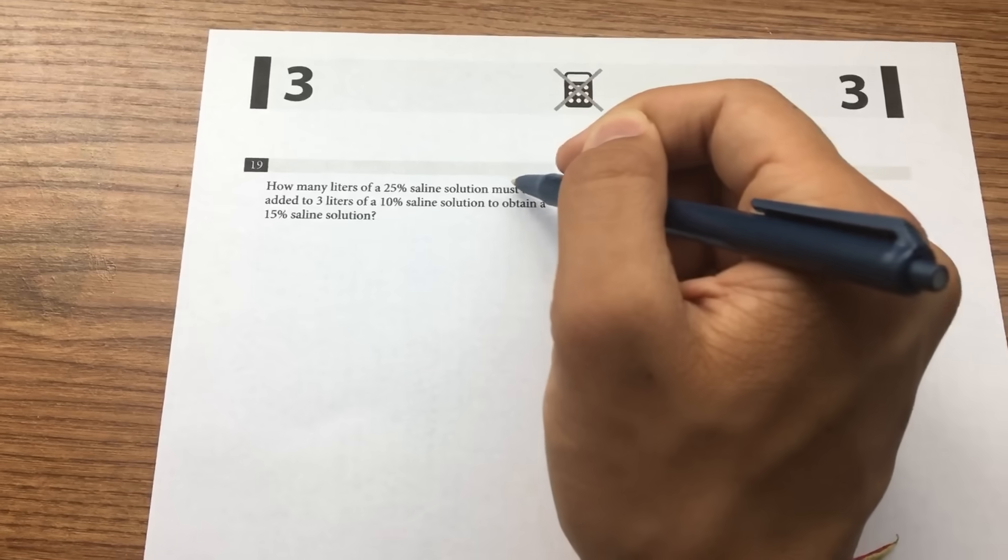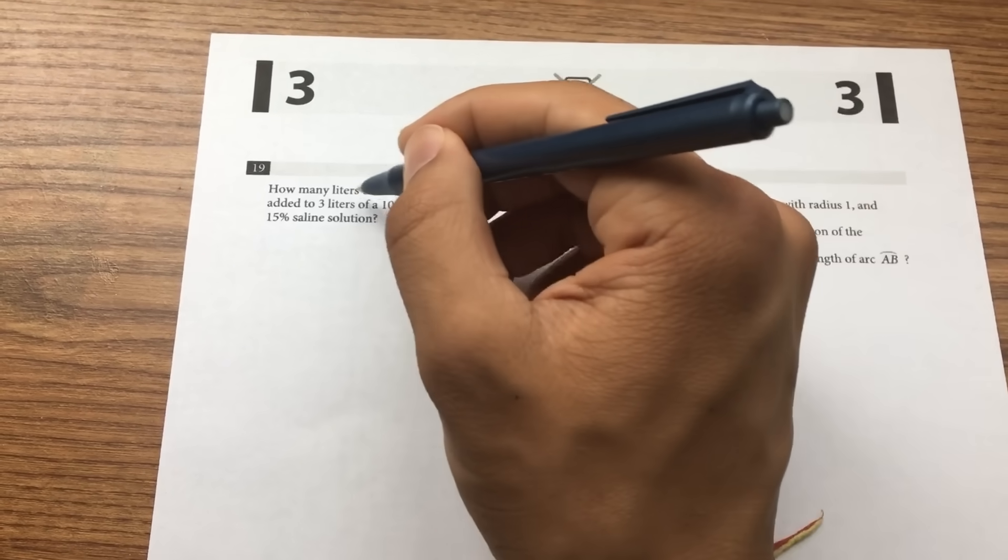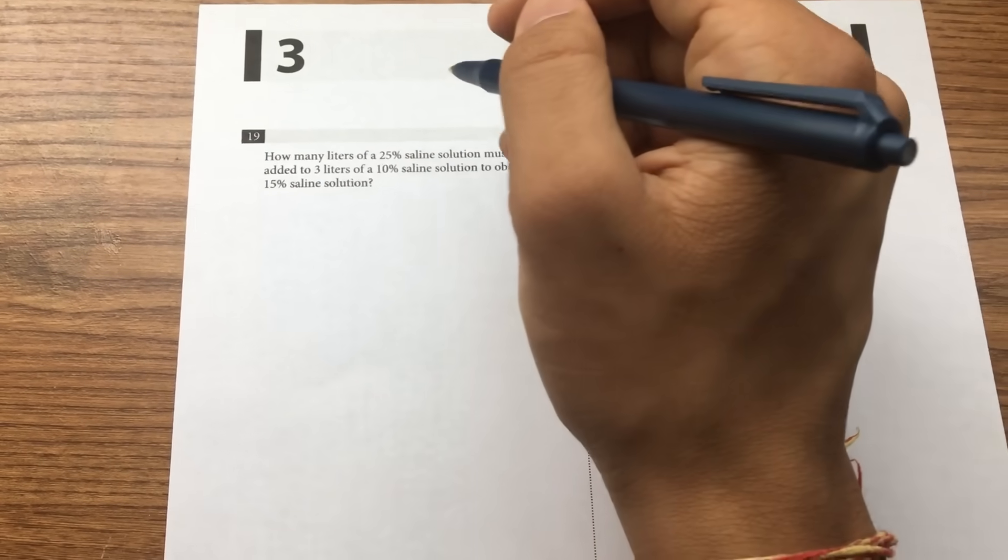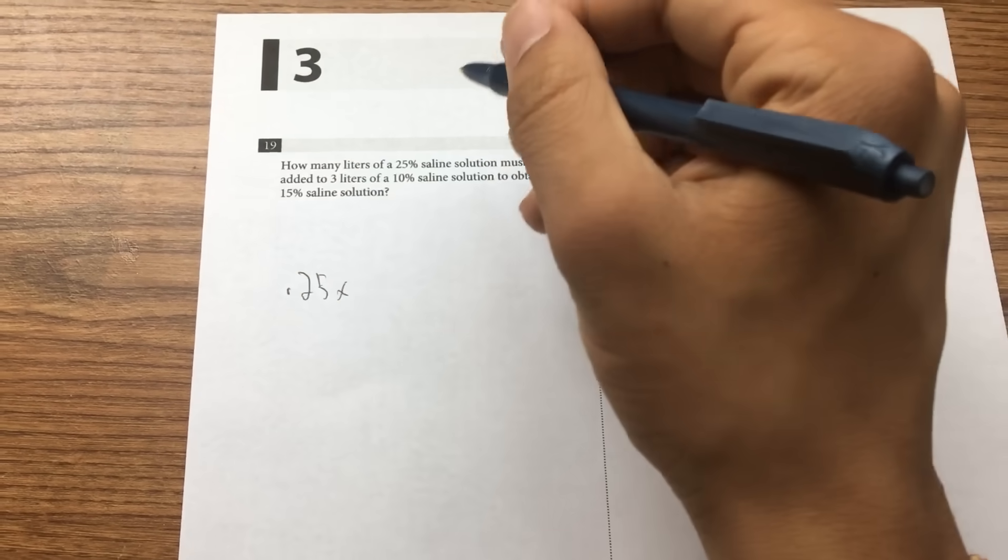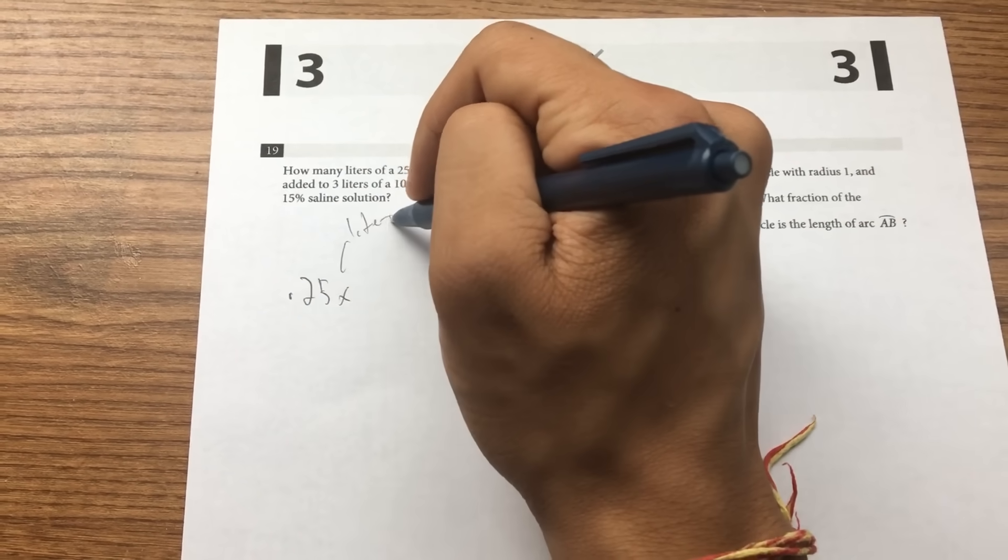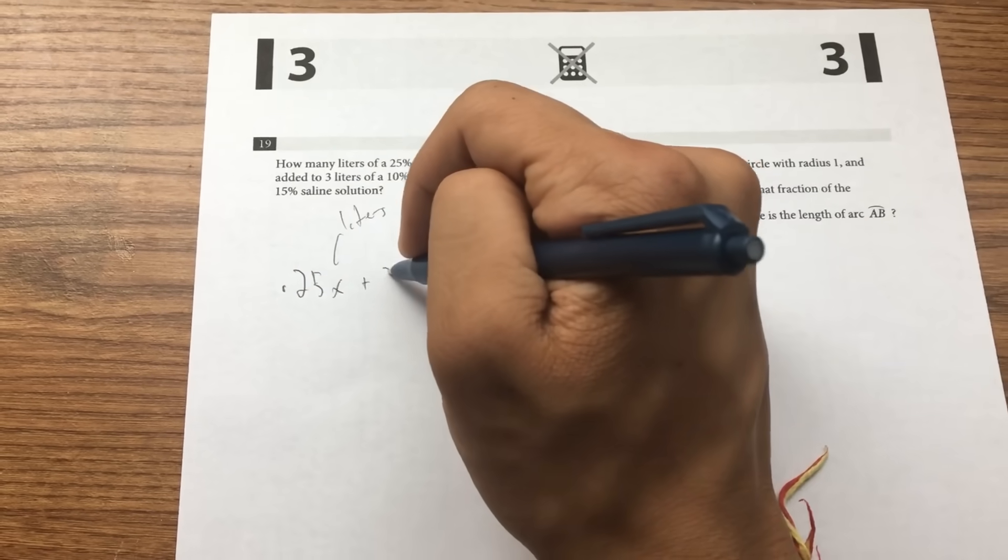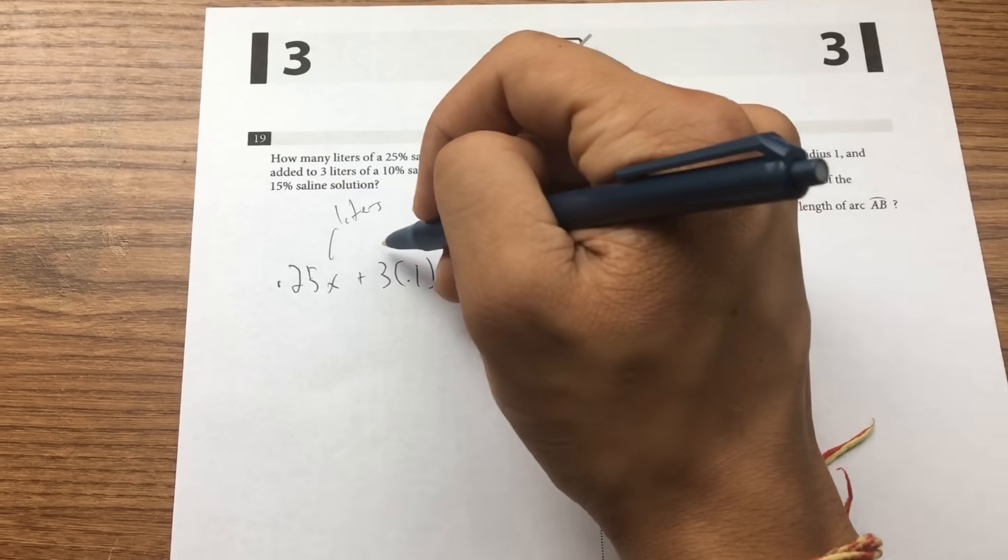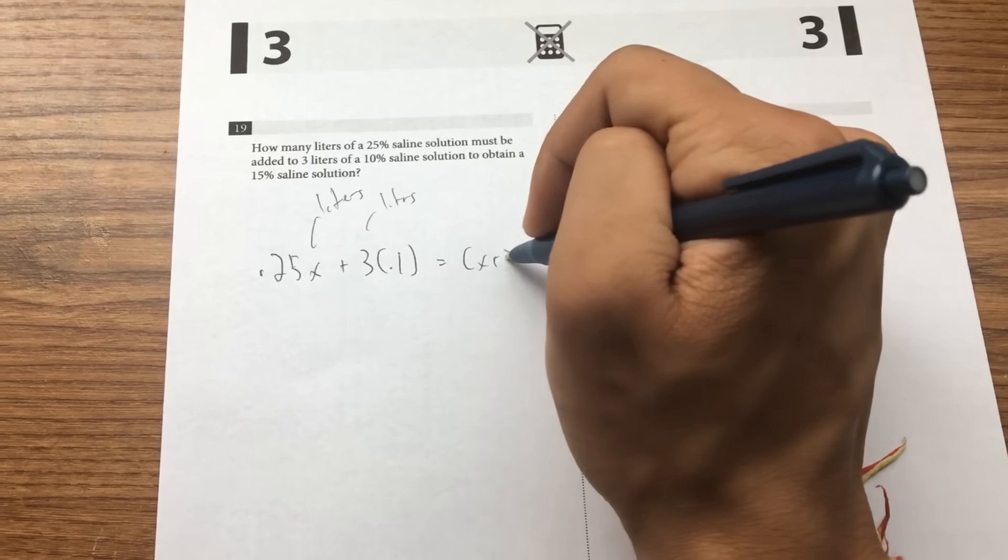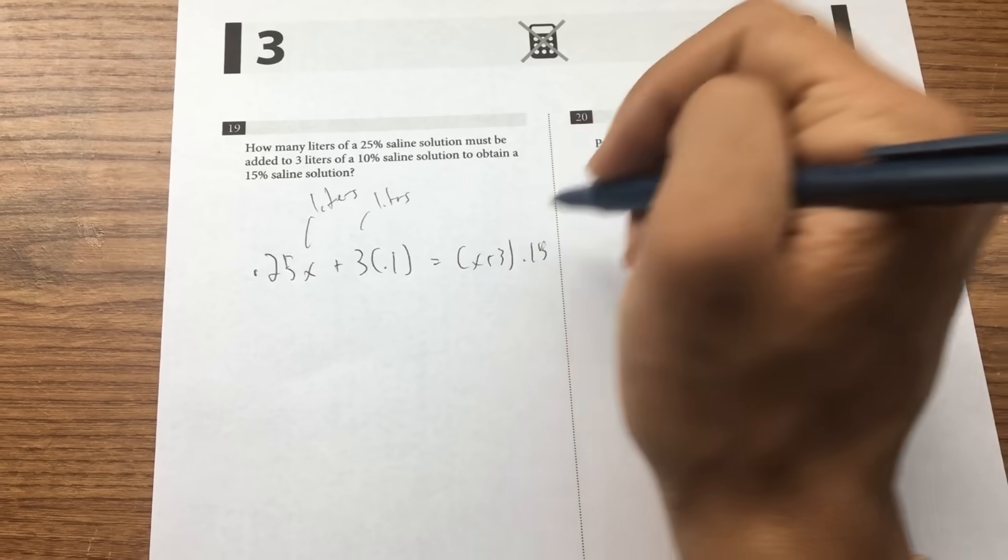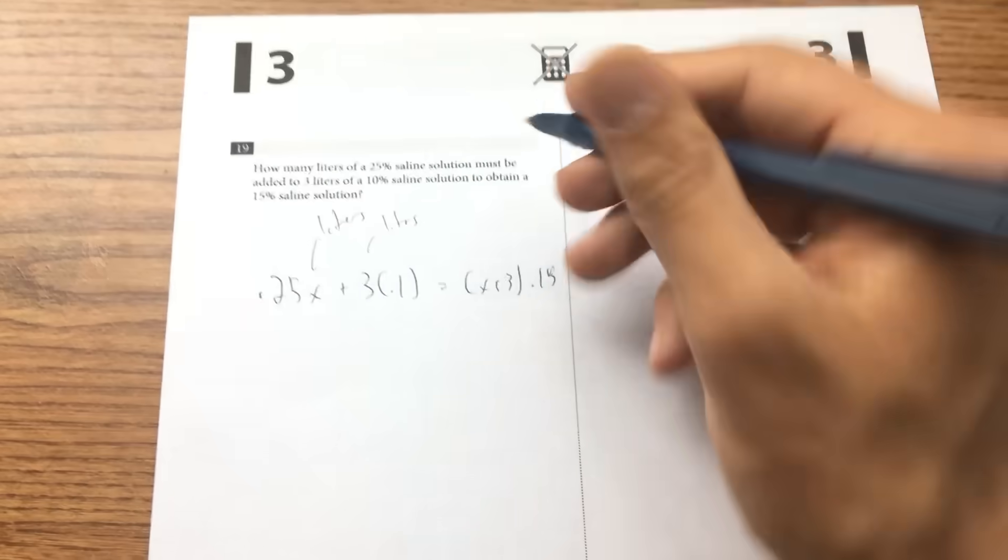How many liters of this? So 0.25x, where x represents liters, plus 3 times 0.1, this is also liters, equals x plus 3 over 0.15. Now this represents a total amount of liters.